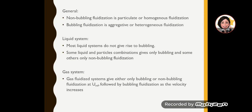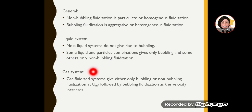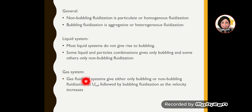In general, non-bubbling fluidization is known as particulate or homogeneous fluidization, while bubbling fluidization is aggregative or heterogeneous fluidization. The liquid system usually does not give rise to bubbling, though some liquid-particle combinations do give only bubbling. In a gas system, the system either gives bubbling or non-bubbling at minimum fluidization, followed by bubbling as velocity increases — so gas-solid systems are usually aggregative or heterogeneous.